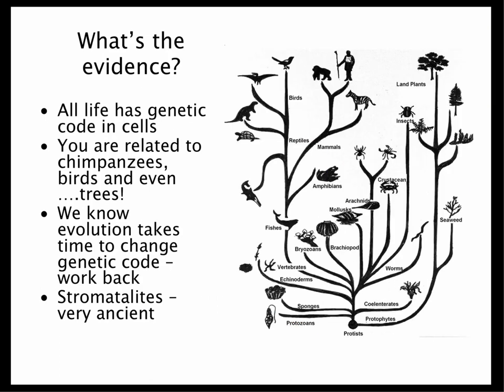What's the evidence for that? Well, all life has genetic code in its cells. All humans are related. Go back further, you're actually related to chimpanzees. Go back even further, you've got a common ancestor with birds and with lizards. Even if you go back far enough, you have a common ancestor with trees. Basically all life on Earth is a family, with some close relatives and some very, very distant relatives.